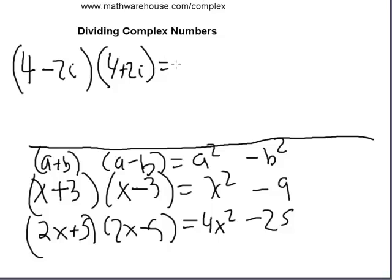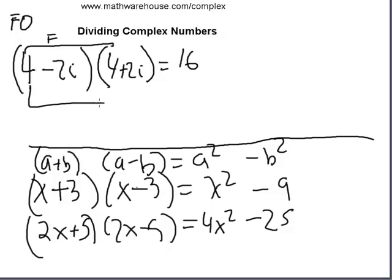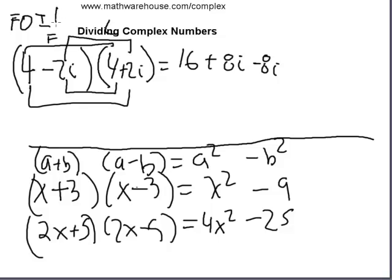Let's perform our normal multiplication using FOIL. The firsts: 4 times 4 is 16. The outers: 4 times 2i is 8i. The inners: negative 2i times 4 is negative 8i. And the last: negative 2i times 2i is negative 4i squared.